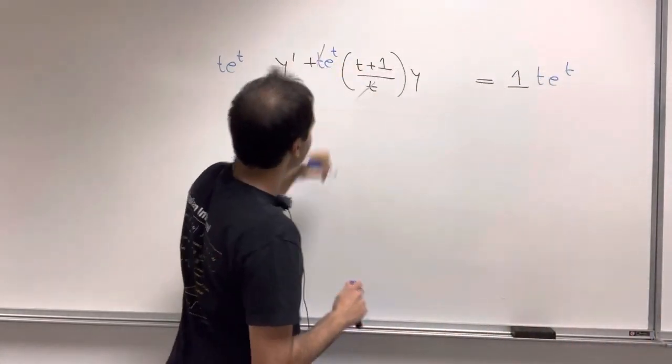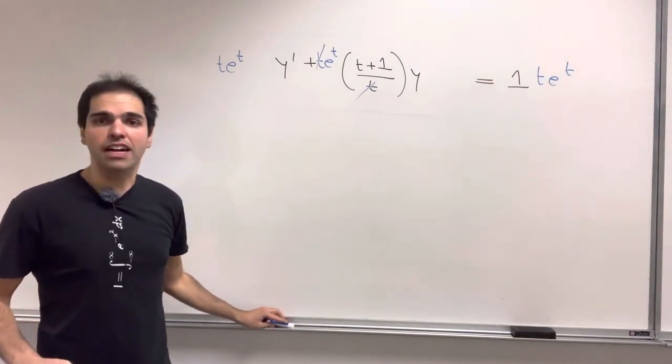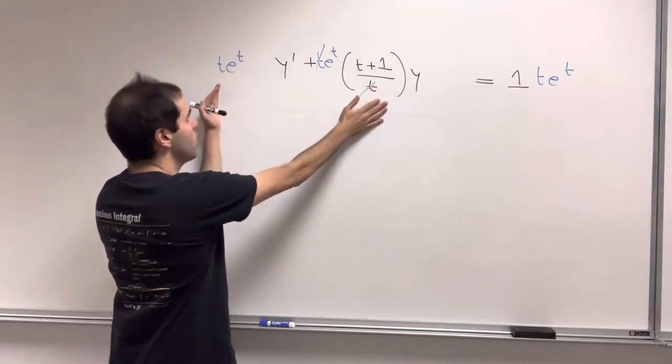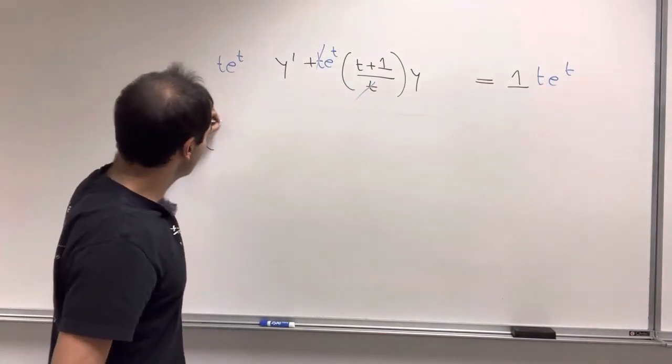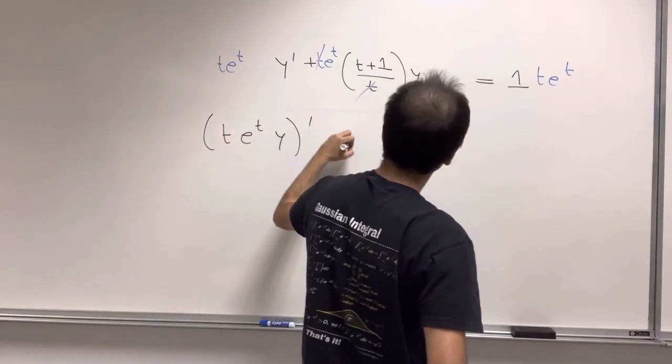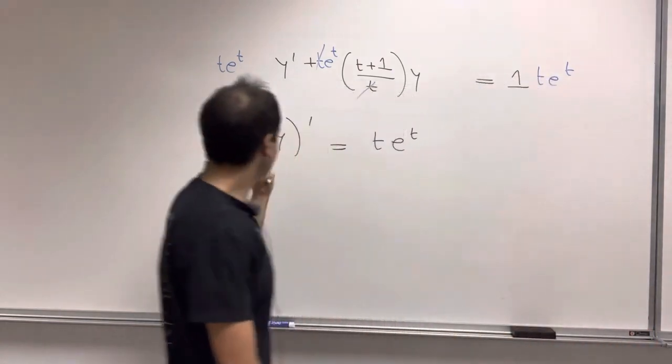And this t cancels out, and the magic of integrating factor, and the reason why this works, is that this whole thing now becomes a derivative. Because what this turns into is t*e^t*y prime, and u equals to t*e^t. And in fact, you can check this by differentiating.